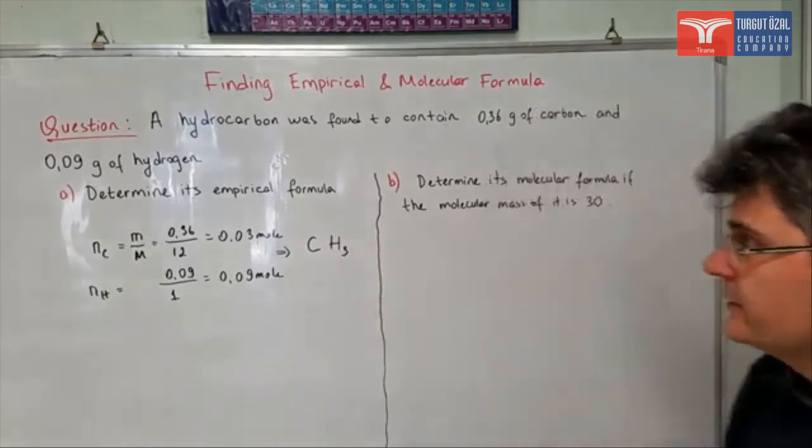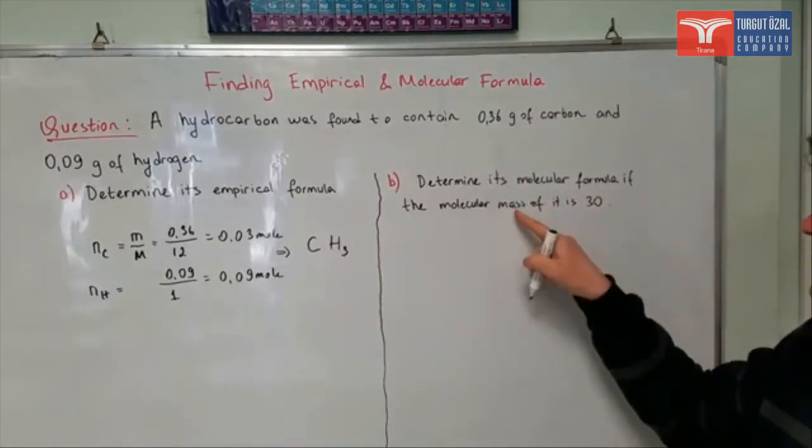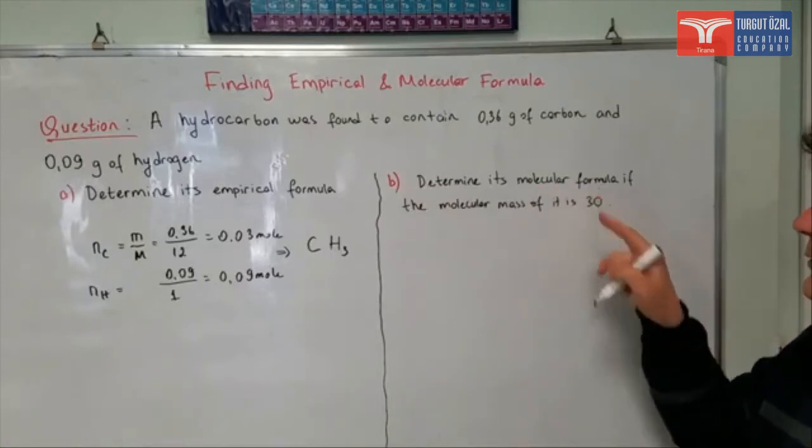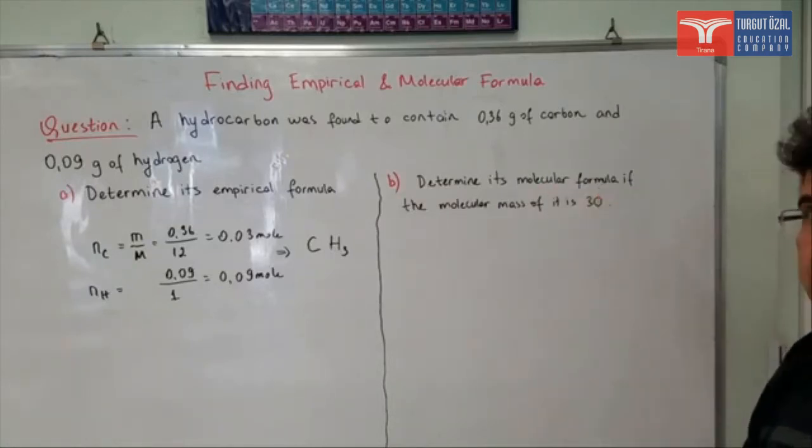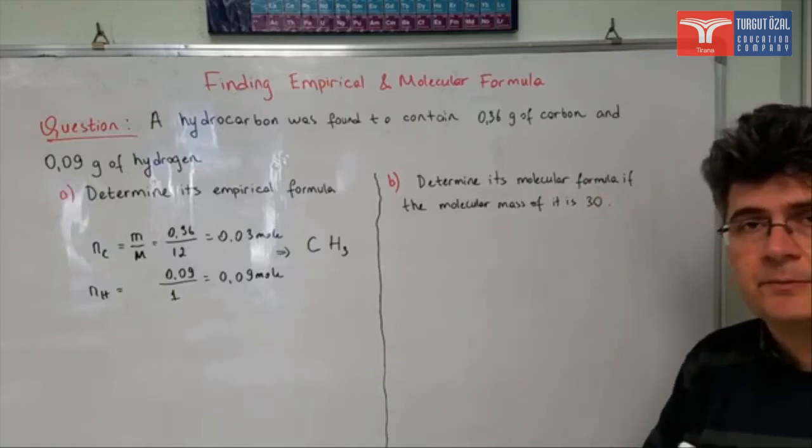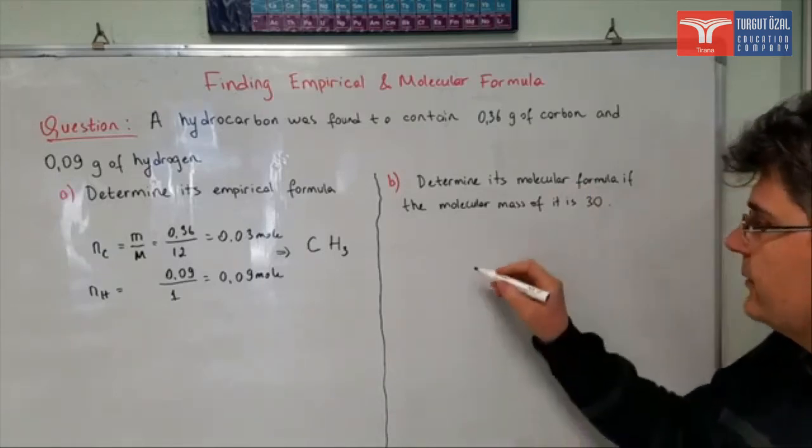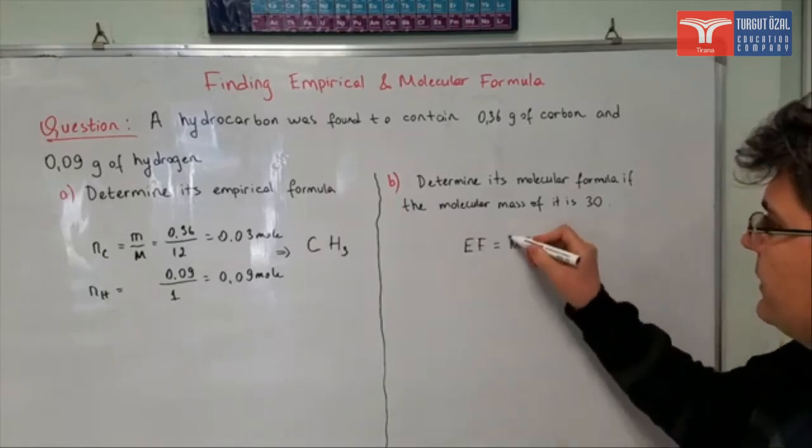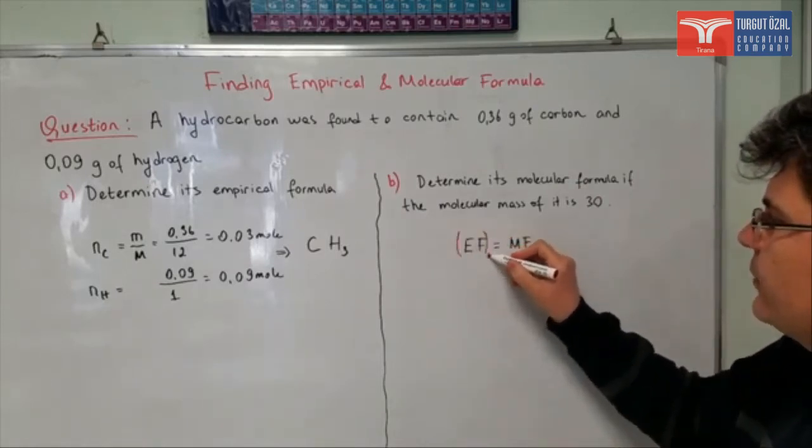In the second part of the question, we are given that the molecular mass of the compound is 30, and it's asking us to find the molecular formula. As you remember, there was a relationship between the empirical formula and the molecular formula. Molecular formula was some multiply of the empirical formula.